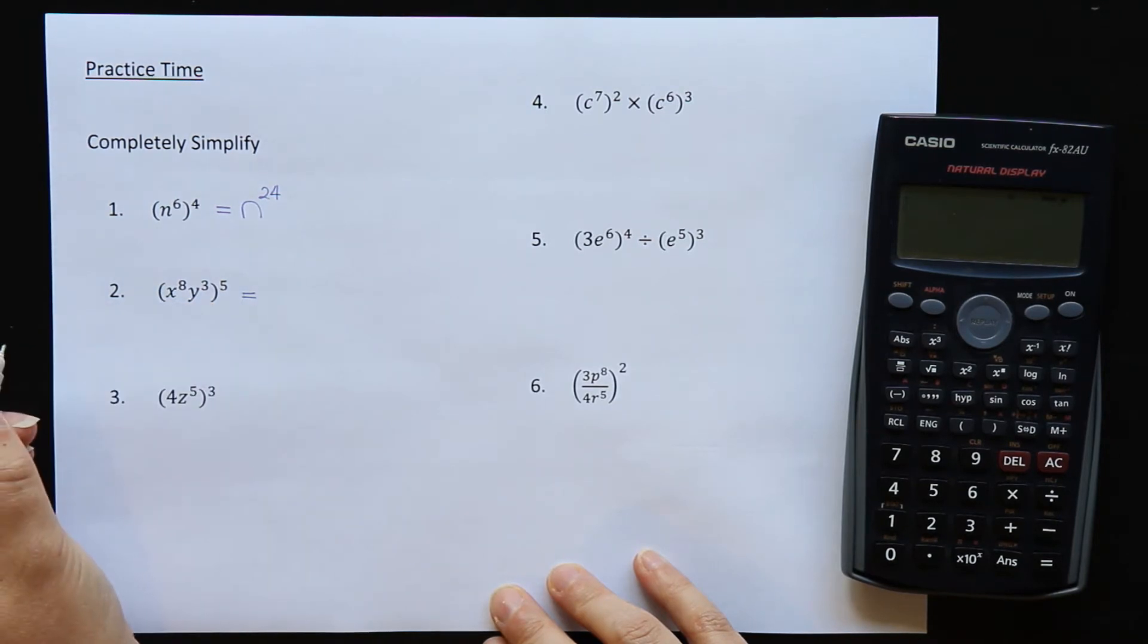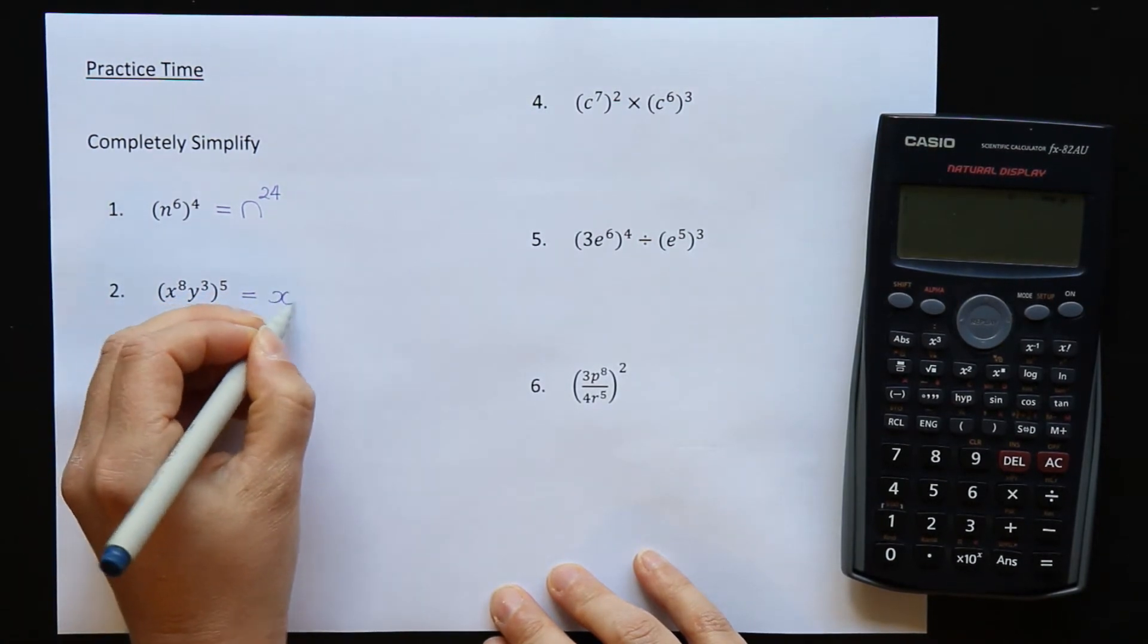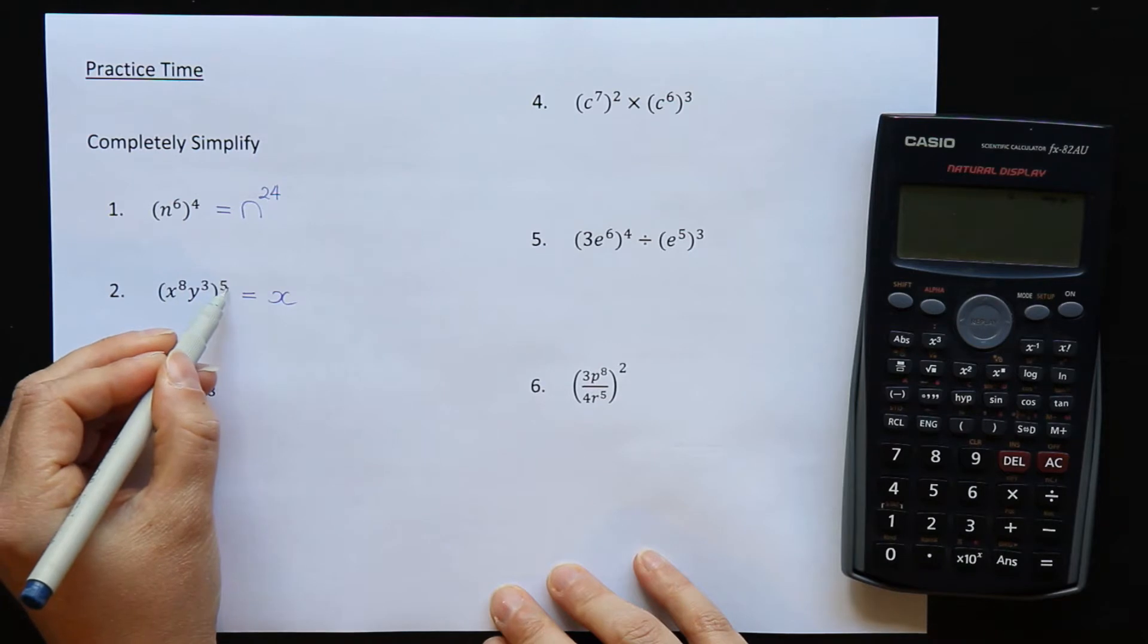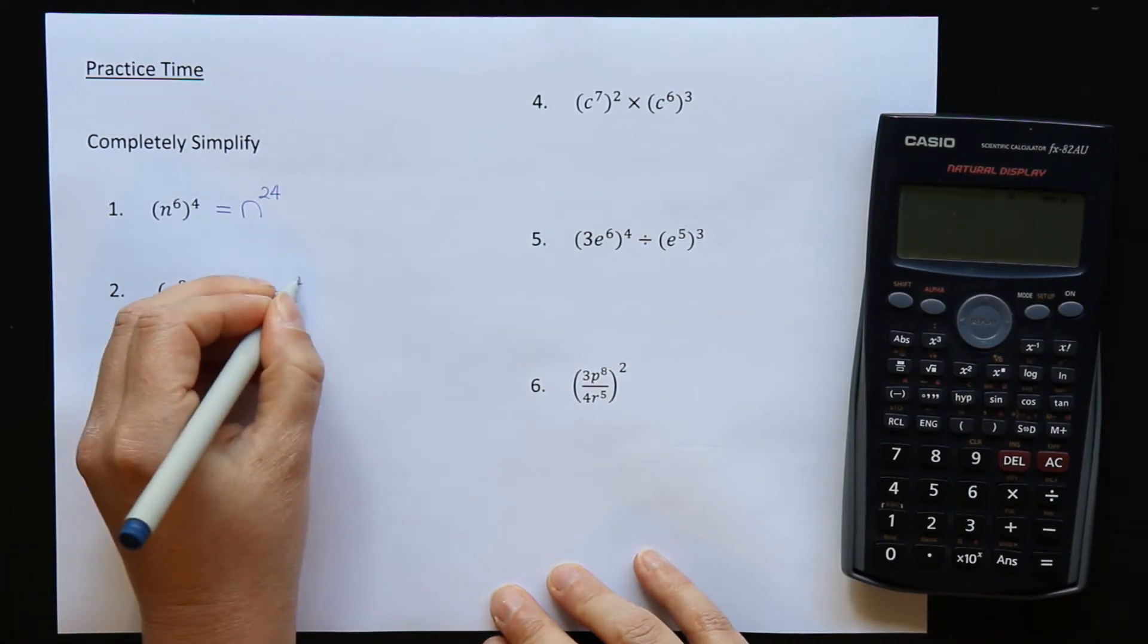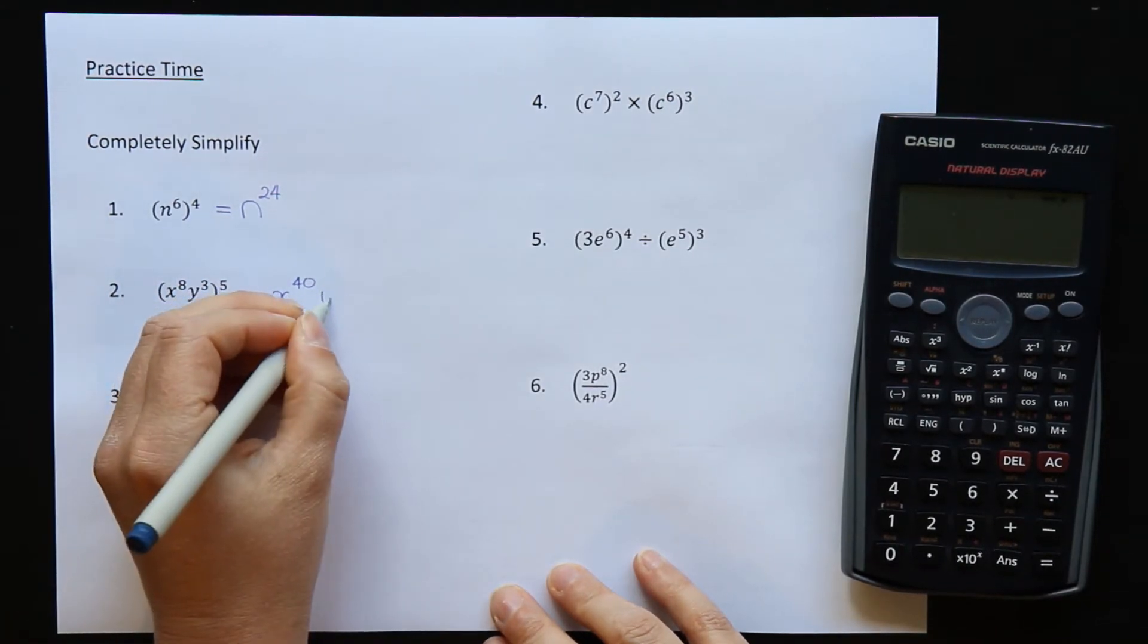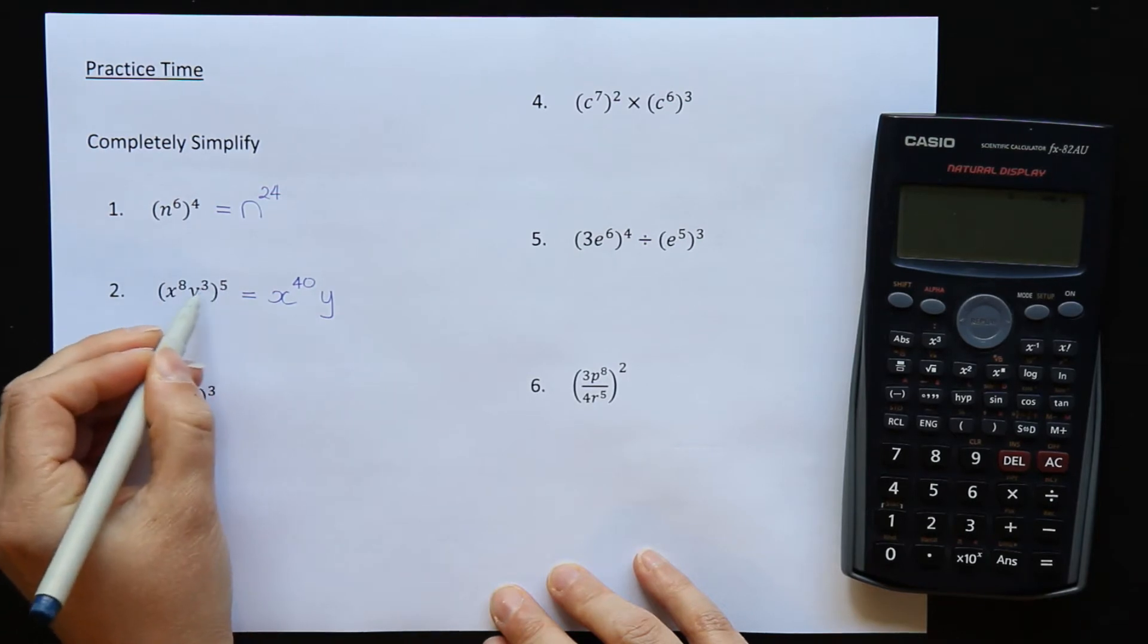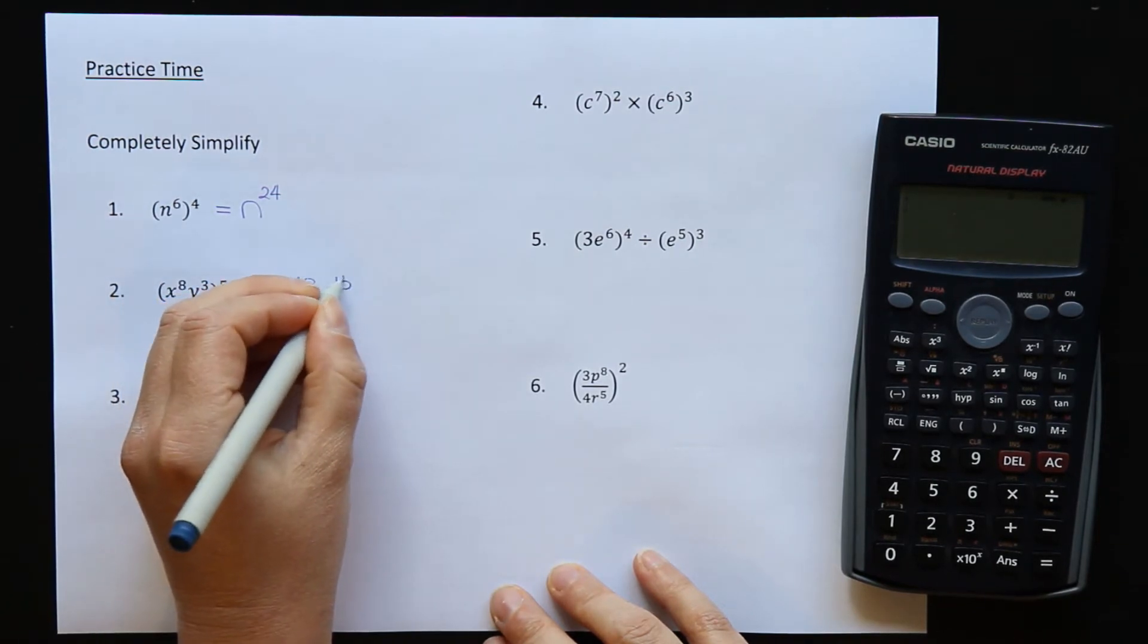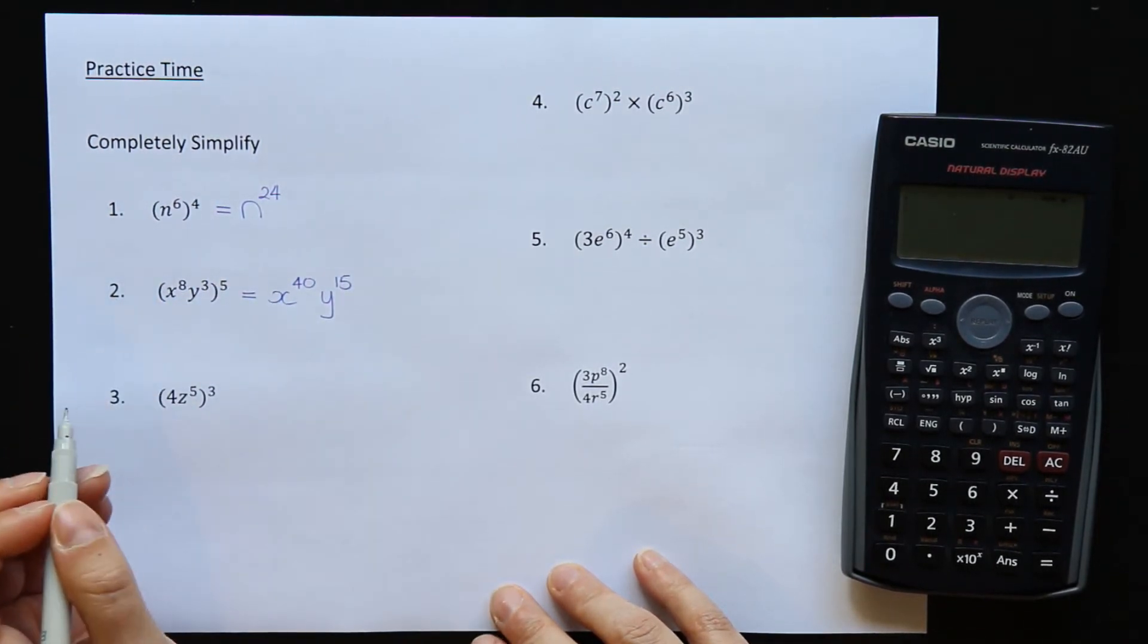x is the base, times 8 times 5 is 40. Then do y, 3 times 5 is 15. x to the power of 40, y to the power of 15.